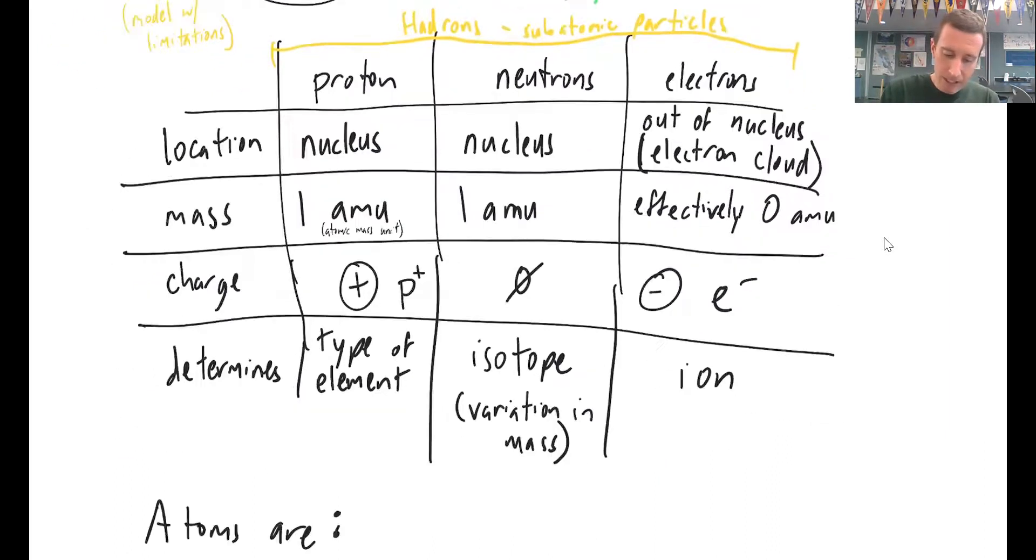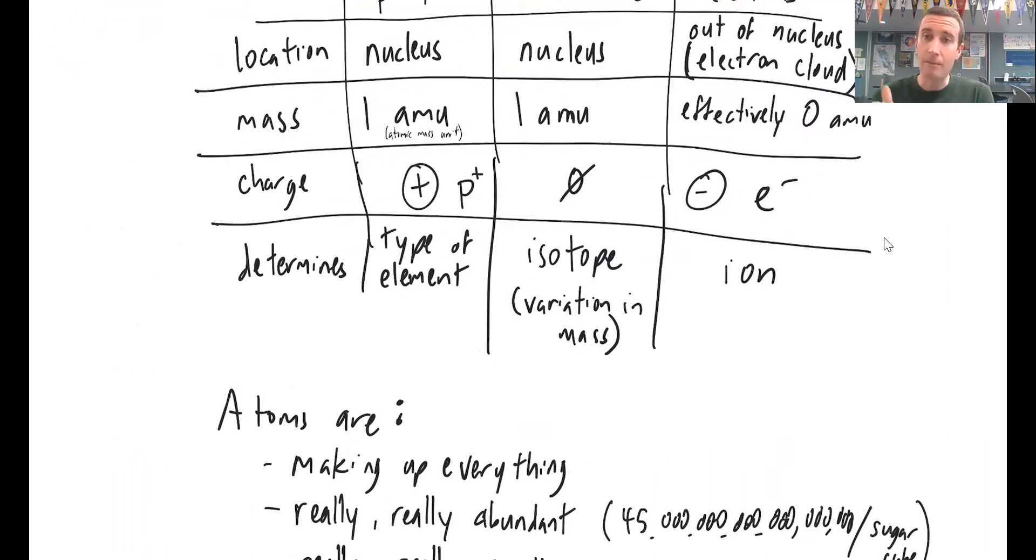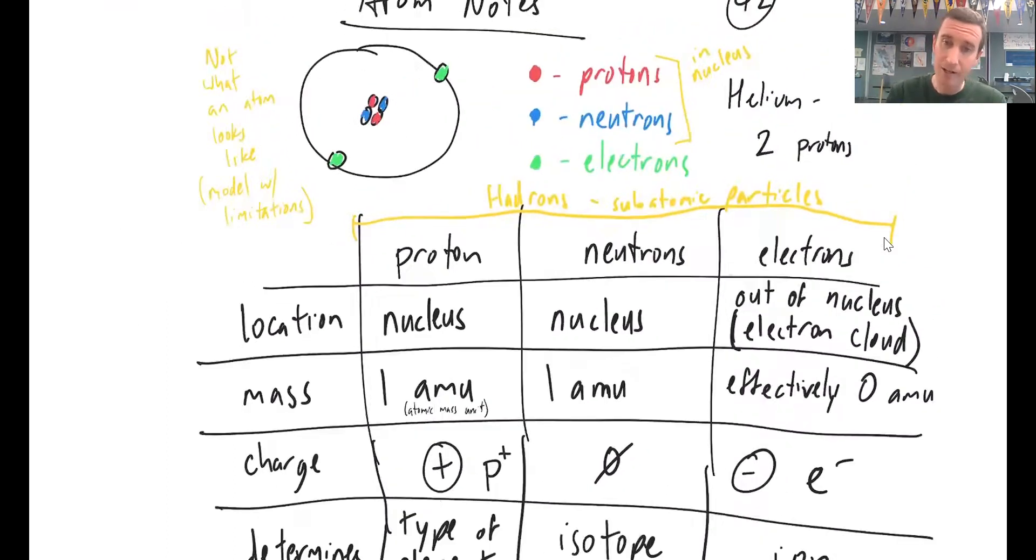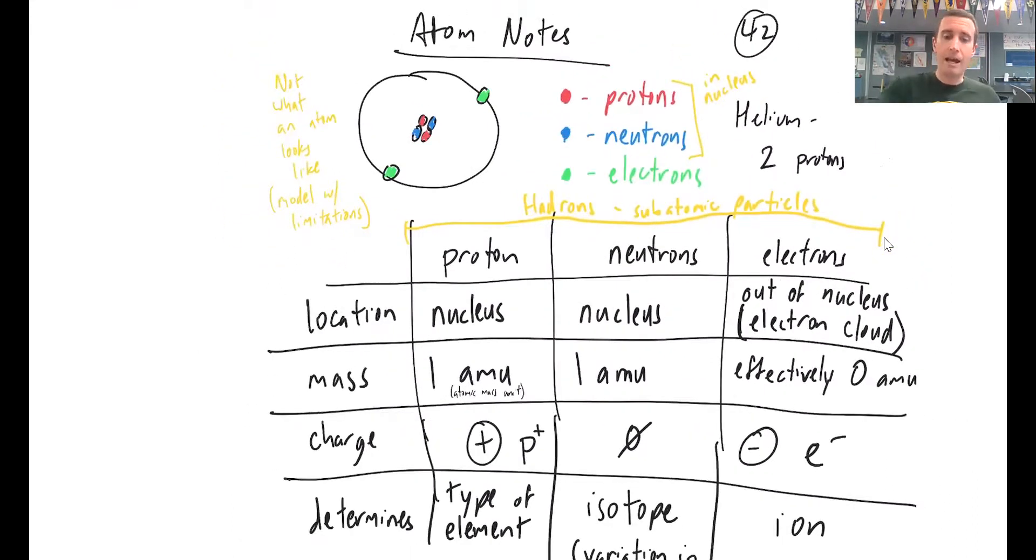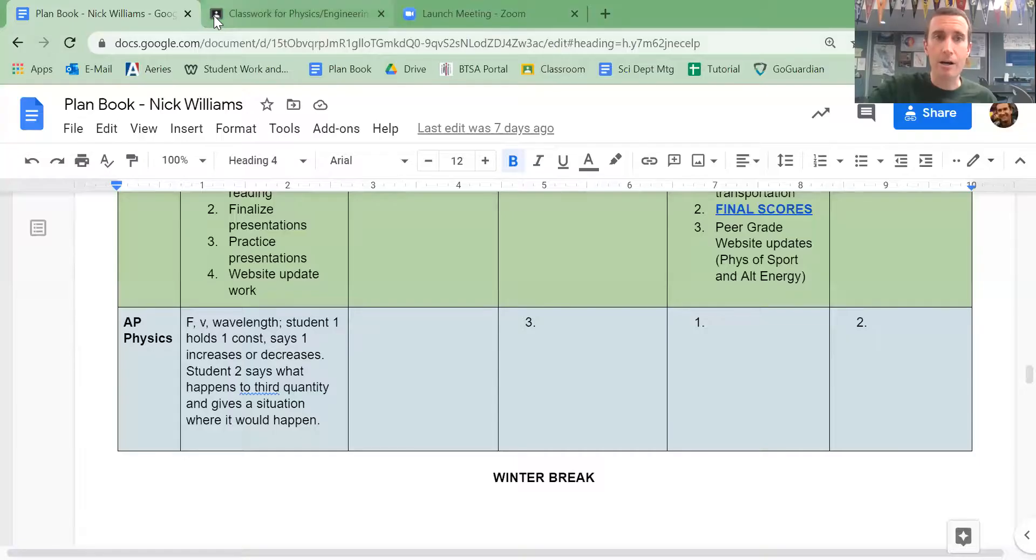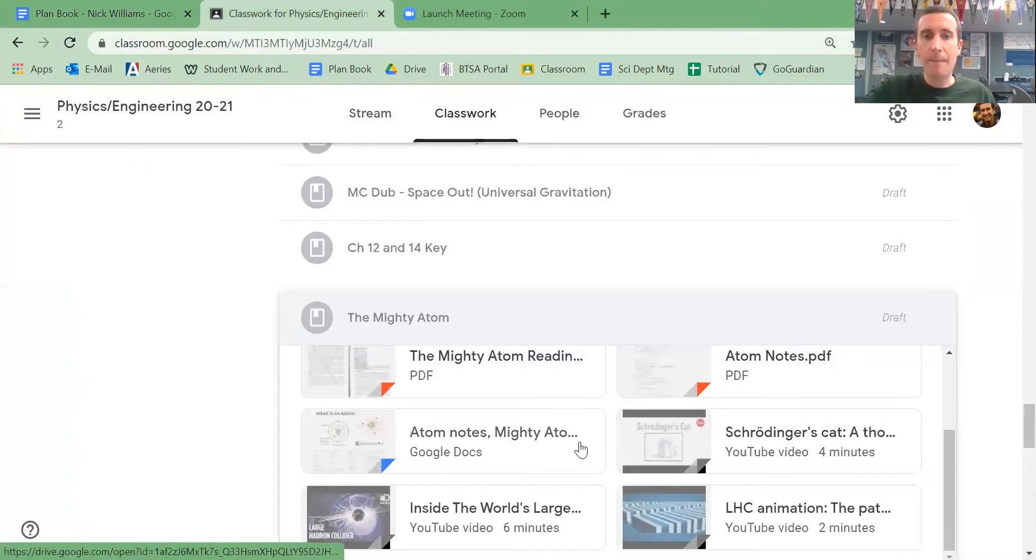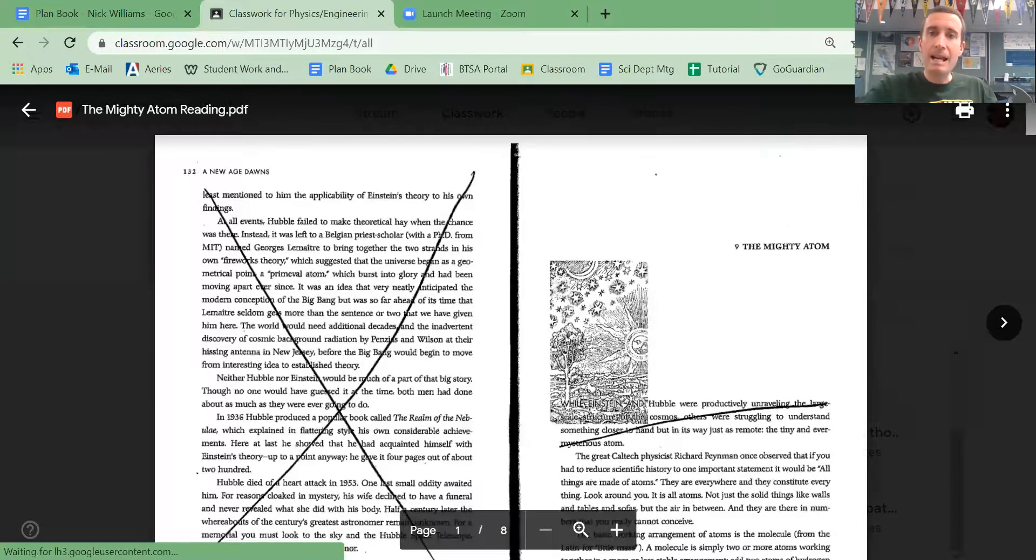So that's a reasonable summary of what's going on with protons, neutrons, and electrons. Now that you've got that base understanding, I'm going to ask you to go through and read a little bit from this reading on Google Classroom, which you're already on because you found this video, called The Mighty Atom.